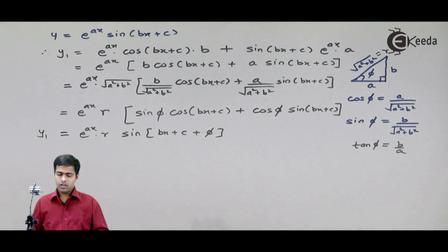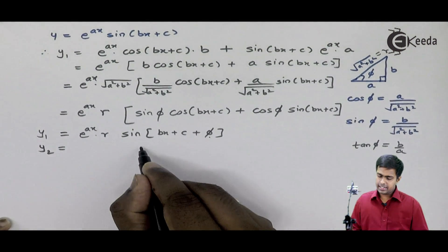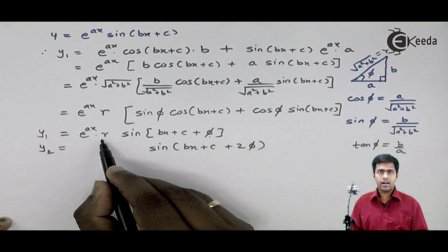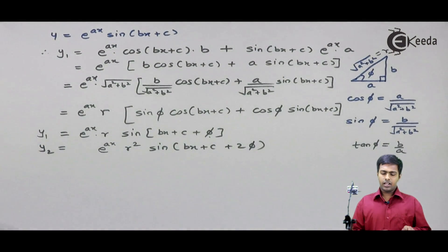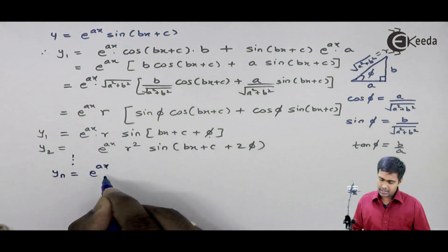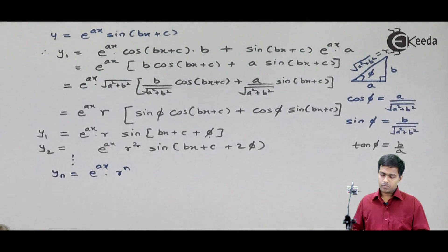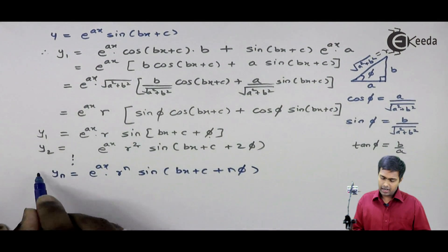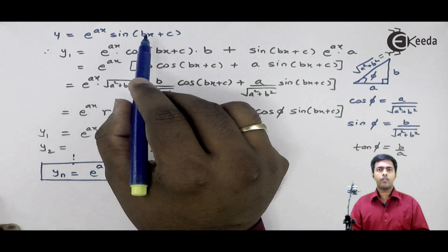After finding y1, we got this extra phi. If I find y2 from this y1, then inside the bracket I will get 2·phi, and one more r outside the bracket, so it becomes r squared with e raised to ax remaining as it is. Hence, if I find yn from this, we will get e raised to ax, r raised to n — because in case of y2 we get r squared and in case of y1 we get r — and inside the bracket we will get sin(bx plus c plus n·phi). This becomes the formula for the nth derivative of e raised to ax times sin(bx plus c).